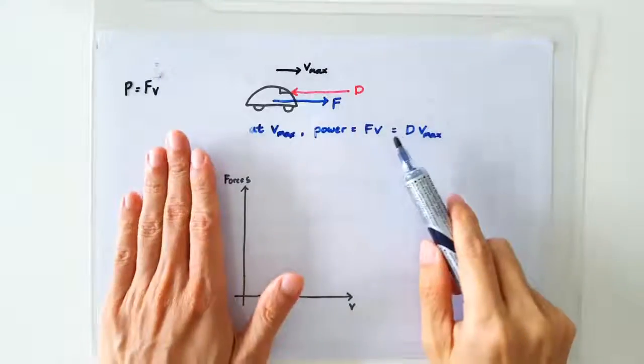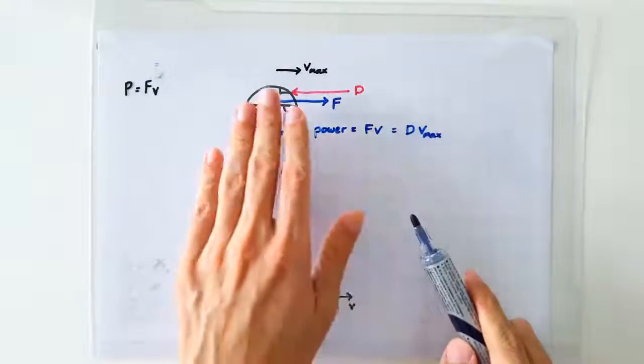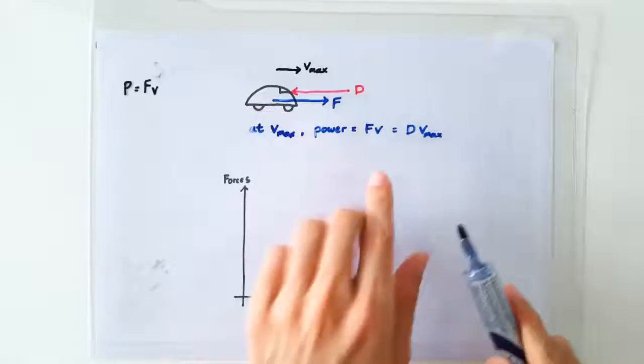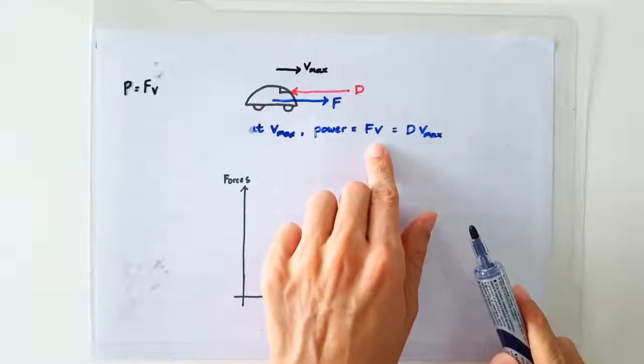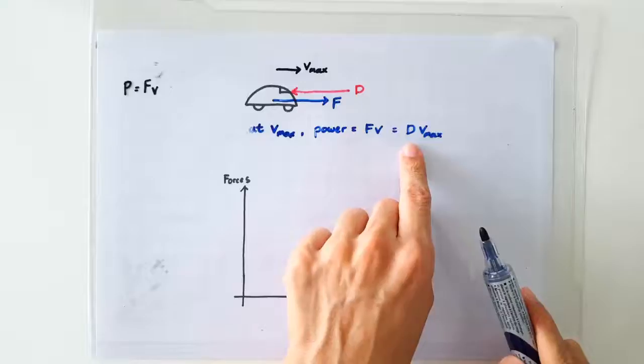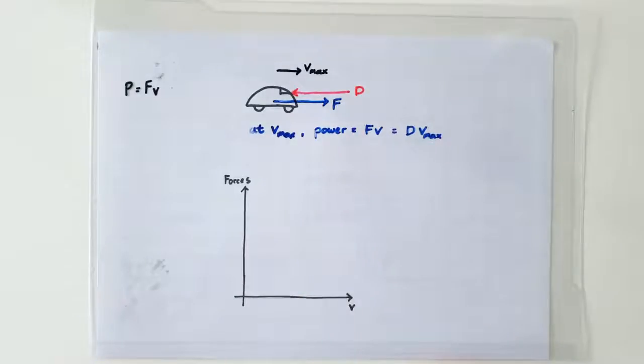This also means that at maximum speed, the power delivered by the engine of the car, which is given by F times V, should be equal to the drag force times the maximum speed.